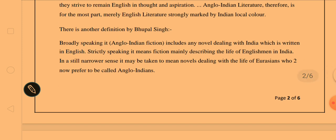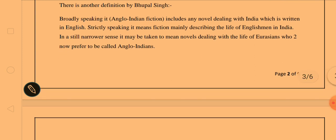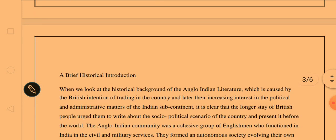There is one more definition. Pupal Singh says, broadly speaking, the Anglo-Indian fiction includes any novel dealing with India which is written in English. Strictly speaking, it means fiction mainly describing the life of Englishmen in India. In a still narrower sense, it may be taken to mean novels dealing with the life of Eurasians who now prefer to be called Anglo-Indians. According to Pupal Singh, these are Englishmen who are living in India or writing about India in their own words.